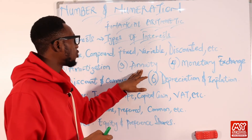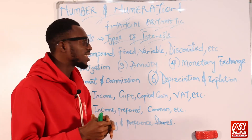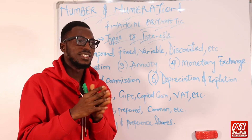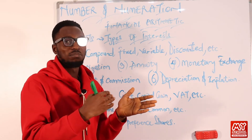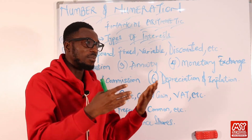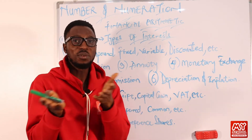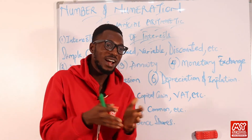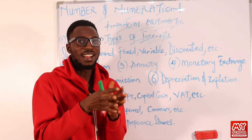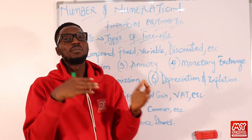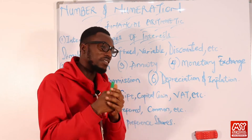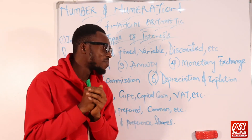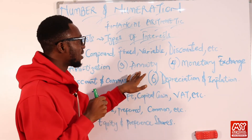Then we have annuity. Annuity is a kind of money paid to you — probably for the rest of your life — maybe between you and your insurance company. So if your annuity is 50k every year, that means at the end of every year you'll be getting 50k, 50k, 50k alerts. That's for annuity.